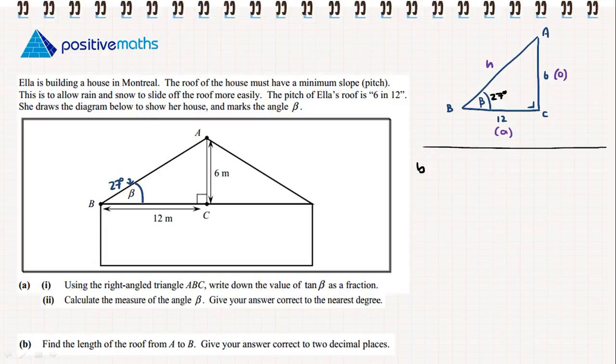Part B. Find the length of the roof from A to B. Give your answer correct to two decimal places. Because we have a right-angle triangle, we can use the theorem of Pythagoras.